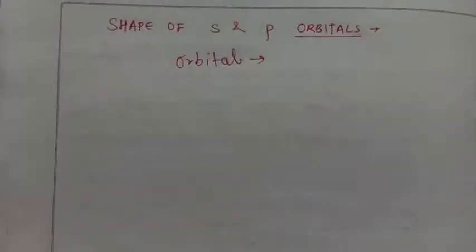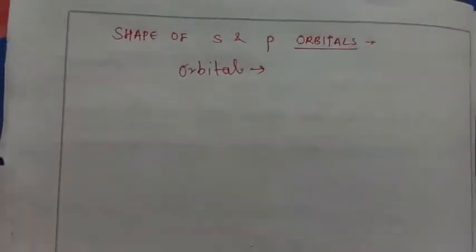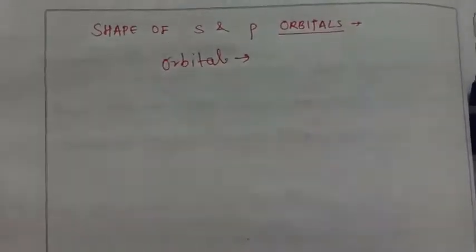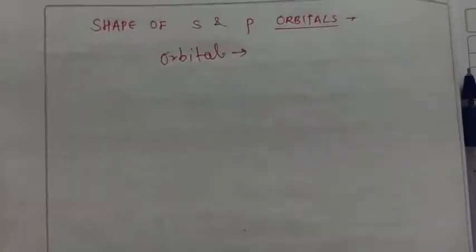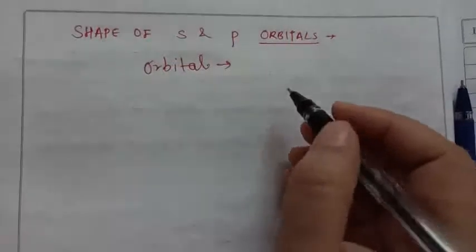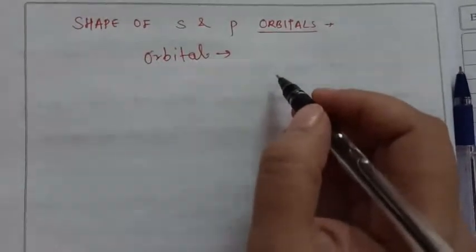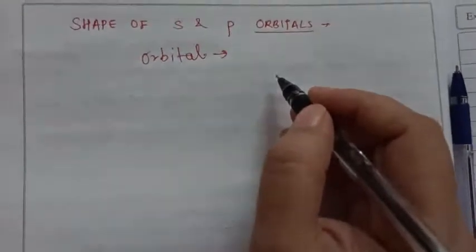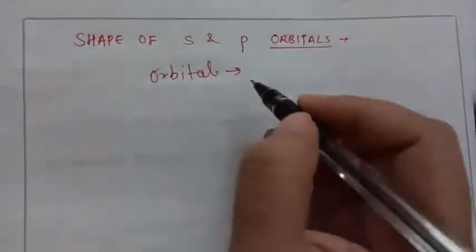I repeat, orbital is a region of space around the nucleus where the probability of finding electron is maximum. That is, wo area nucleus ke aaspaas ka jahaan par electron ke paye jane ke probability—probability means what? Sambhavna, possibility—maximum ho orbital kehlati hai.